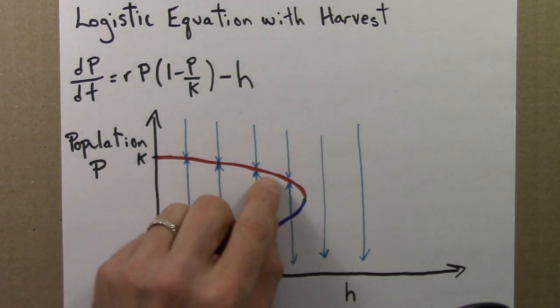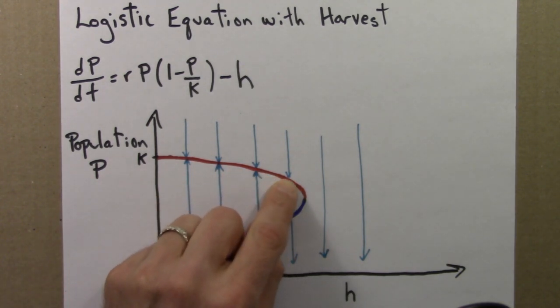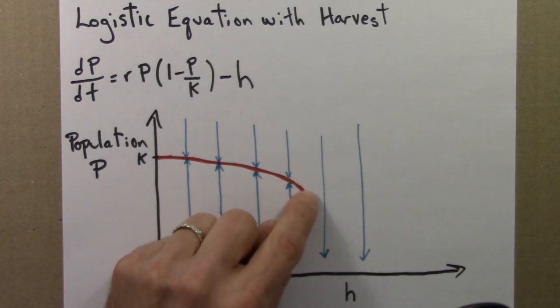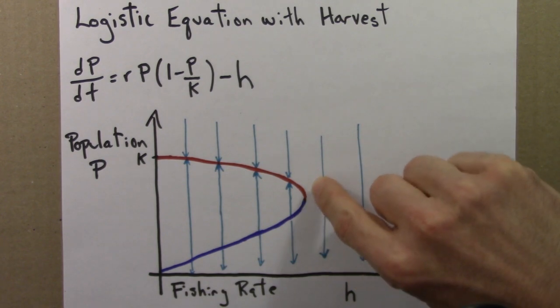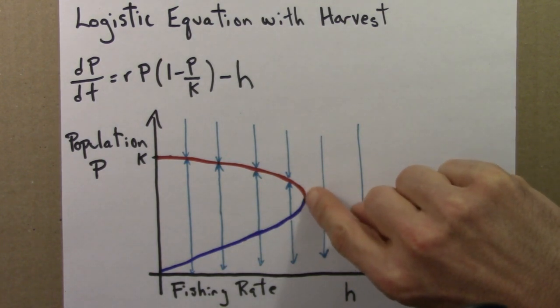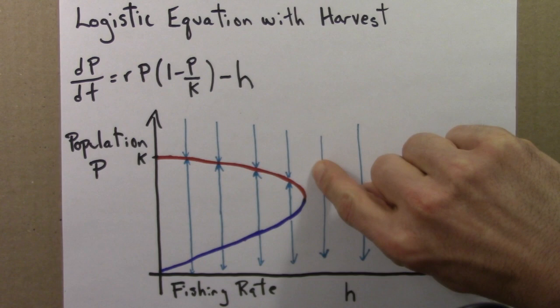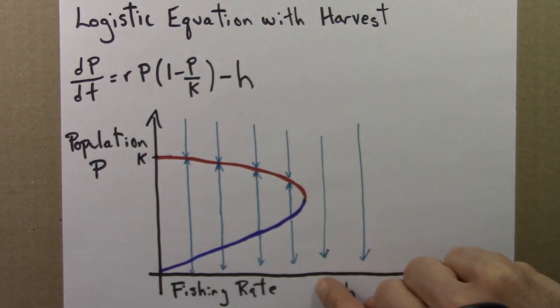And then we keep going, maybe we're out here, and we decide, okay, let's do a little bit more fishing, things have been going well, and we allow a bit more fishing, and all of a sudden we end up over here. So if h, the fishing rate, is this high, then there is no steady state population, and the fish population would just crash. It would go right down to zero.